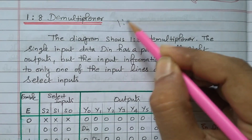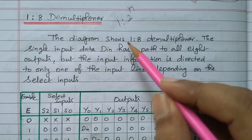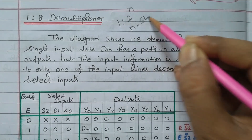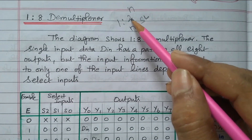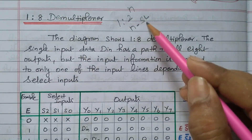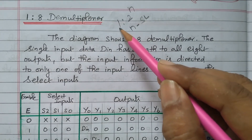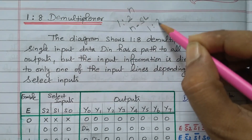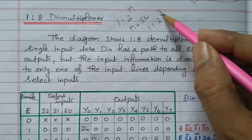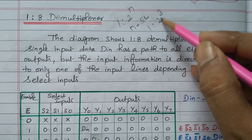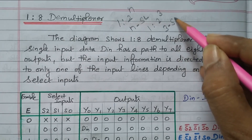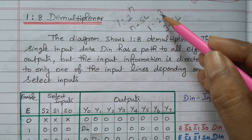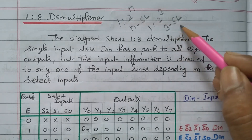A demultiplexer means it is 1-to-2^n: 1 input and 2^n outputs with n selection lines. This 1 input is produced as 2^n outputs based on the selection line. The selection line decides how this 1 input is converted into 2^n outputs. In this case we have 1-to-2^3, so we get 1-to-8 demultiplexer with 3 selection lines deciding how 1 input produces 8 different outputs.